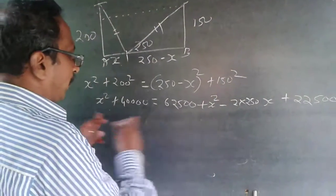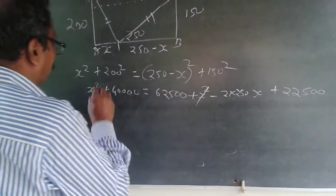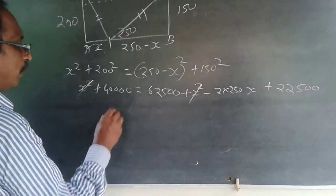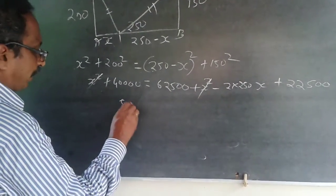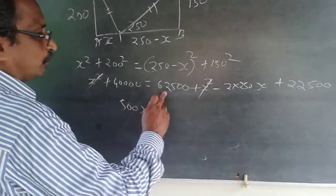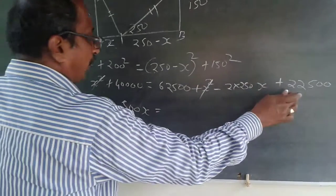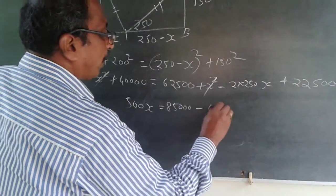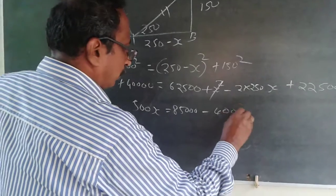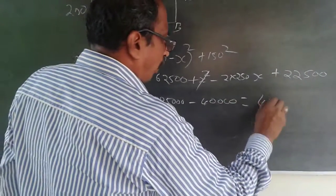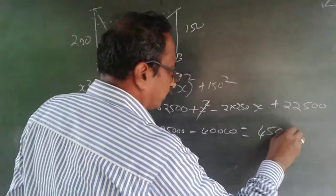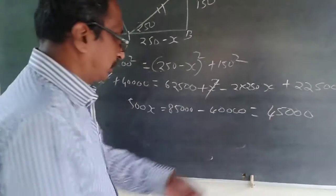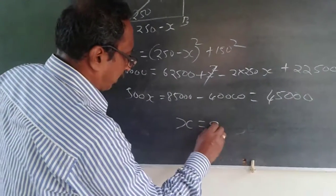The x² on both sides cancels out. Bringing terms together: 500x = 62,500 + 22,500 − 40,000, which gives 500x = 45,000.